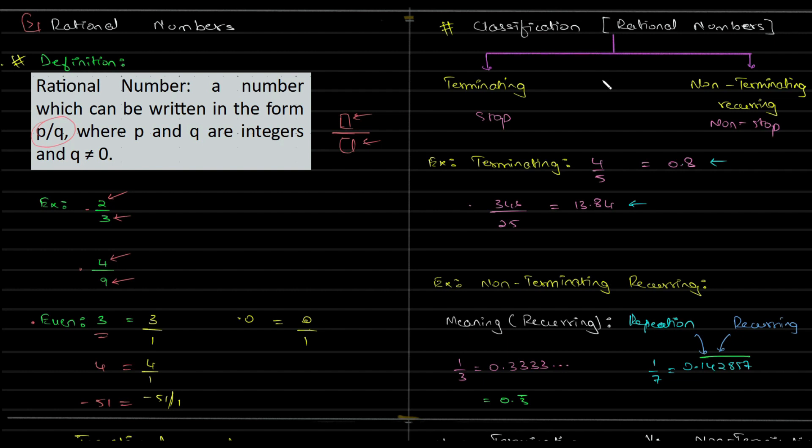What is the rational number? That rational number has further classification as terminating and non-terminating. Terminating is when you do a division, the decimals you get will stop. In non-terminating recurring, it will never stop. There is a particular set of numbers that will keep coming back, and we indicate this pattern by putting a bar.